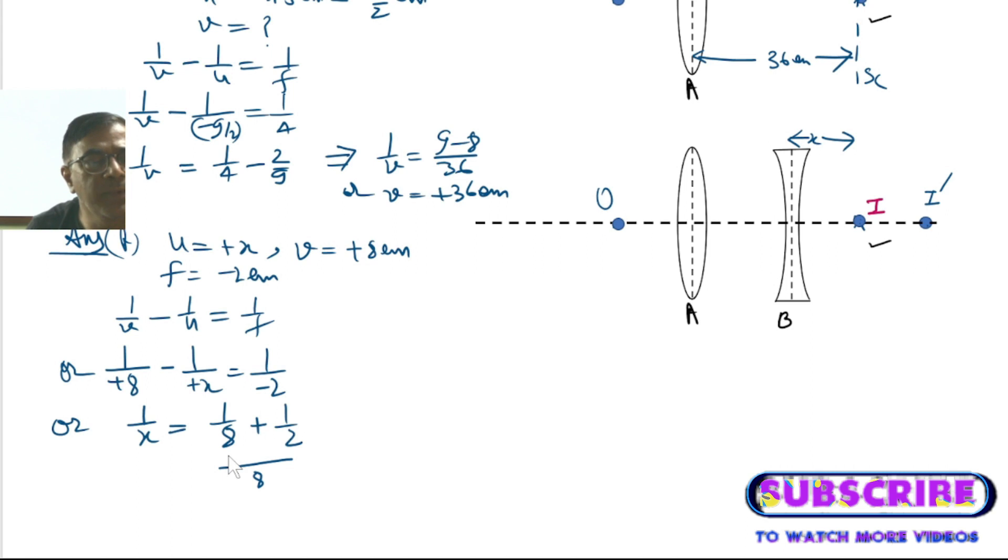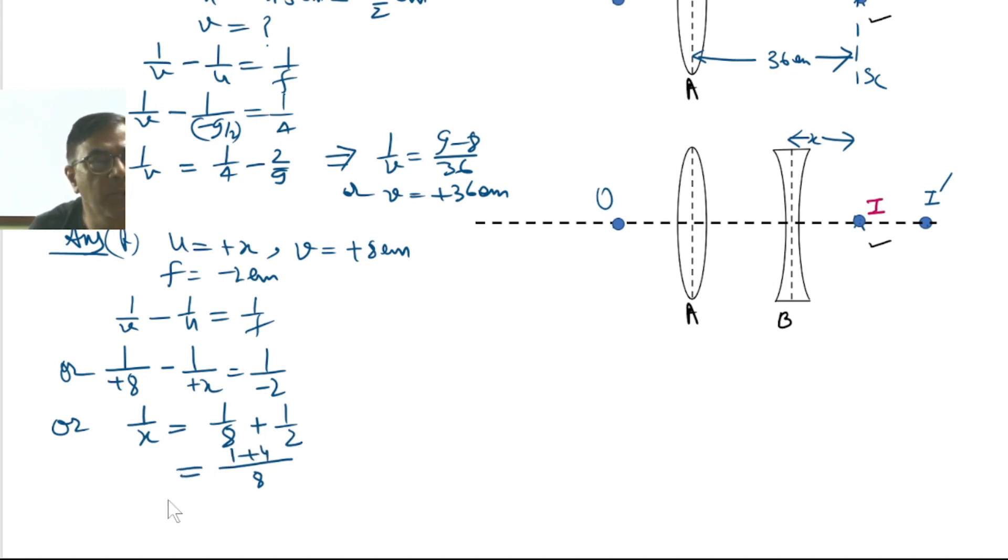Take 8 as LCM. This is 1 plus 4. This implies that X equals 8 by 5 centimeters, which equals 1.6 centimeters.